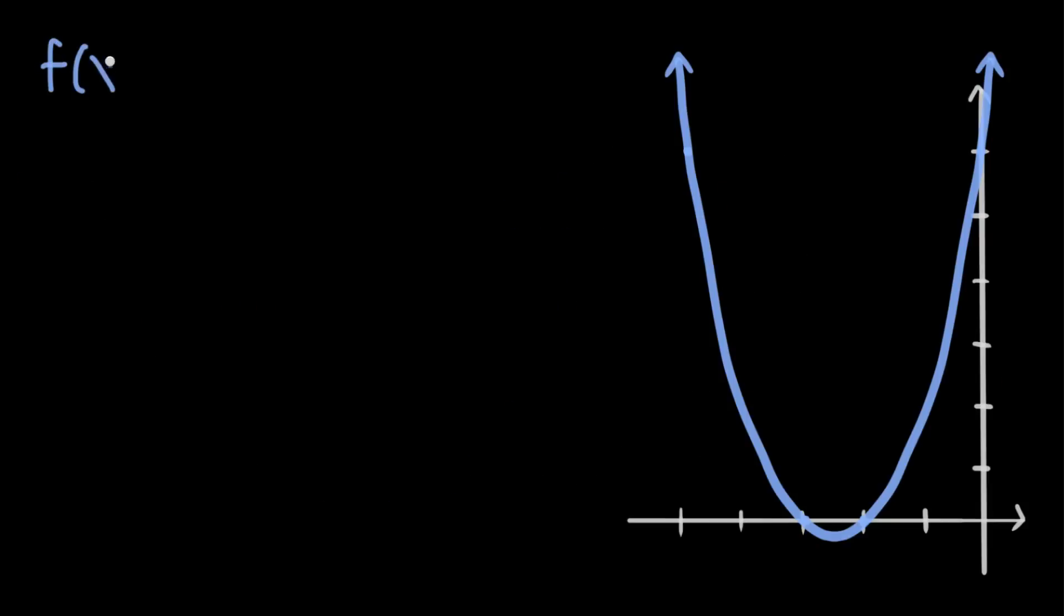But if you're given the equation for a function, you can use the derivative of the function to find the slope, and then the equation of the tangent line at a given point. To do this, you'll first need to pick a value of x, and determine f.